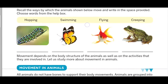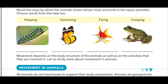हमारे पास यहाँ पर चार images दी गई हैं। इनके अंदर कौन क्या करता है? Swing कौन करता है? Flying कौन करता है? Creeping कौन करता है? And hopping कौन करता है? Swing करती है fish, और flying करती है butterfly। Creeping करता है tadpole, and hopping करता है frog।